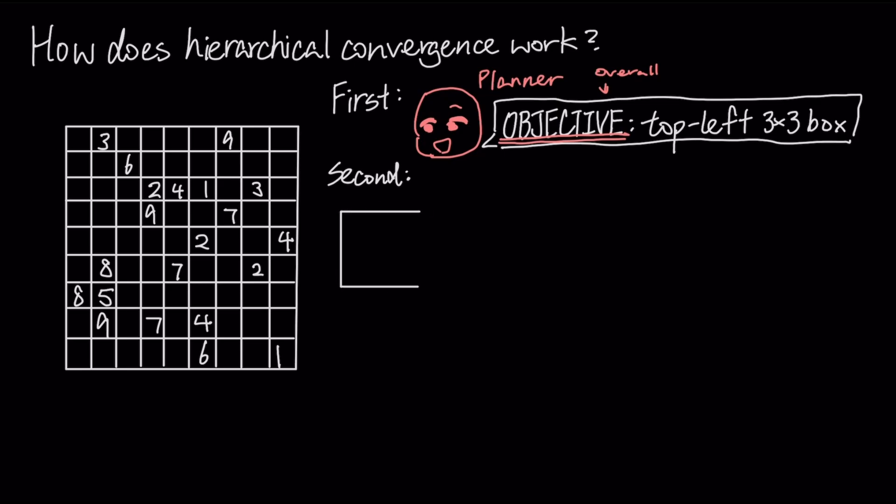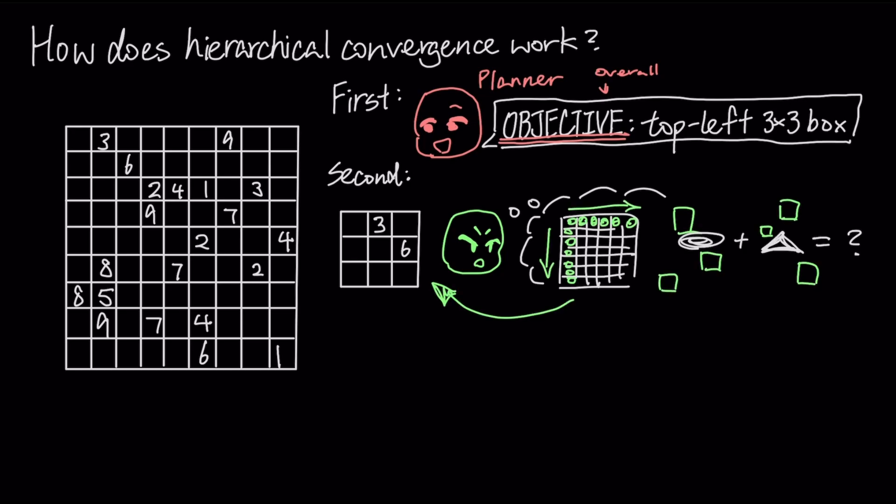Then, the low-level executor module performs many rapid, localized calculations, checking rows and columns, until it fills that box and reaches a stable state.